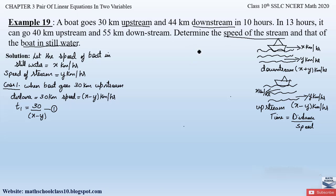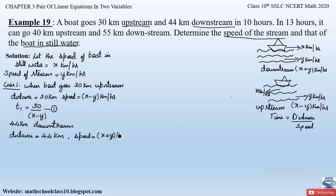Similarly, when the boat goes 44 kilometers downstream, the distance is 44 kilometers and the downstream speed is x plus y kilometers per hour. So the time t2 is equal to 44 divided by x plus y — let this be equation number 2.